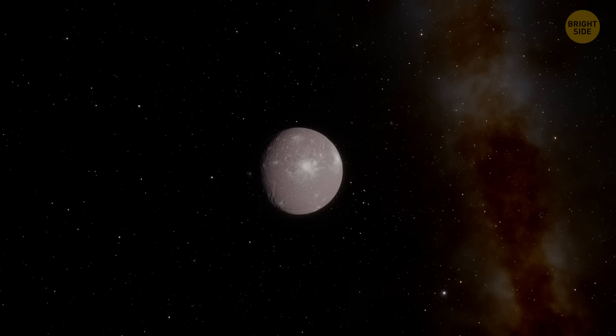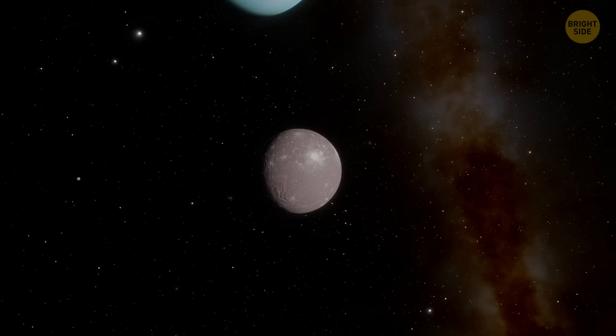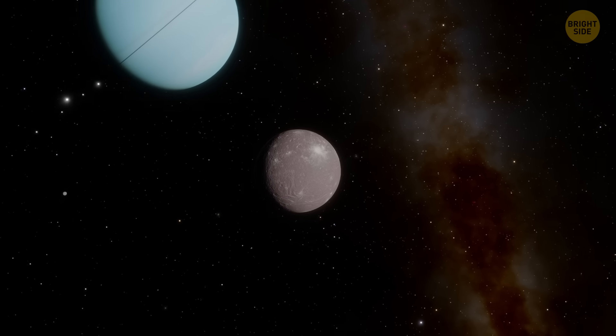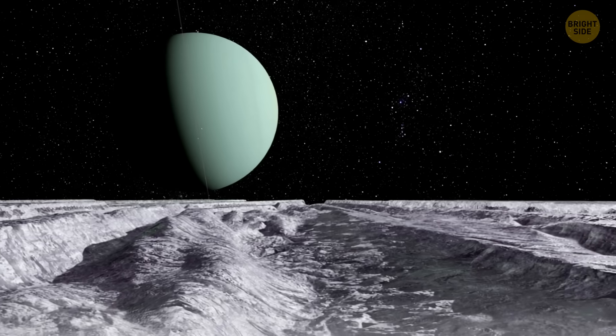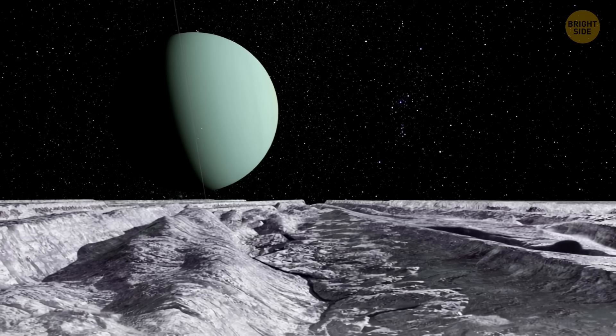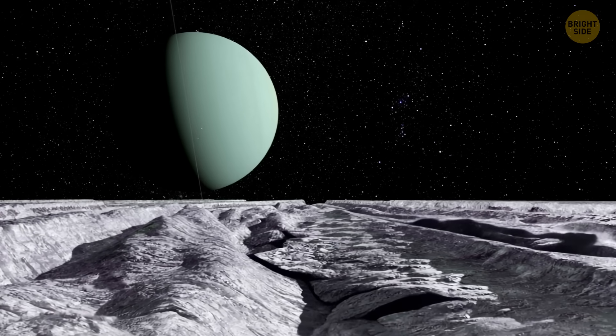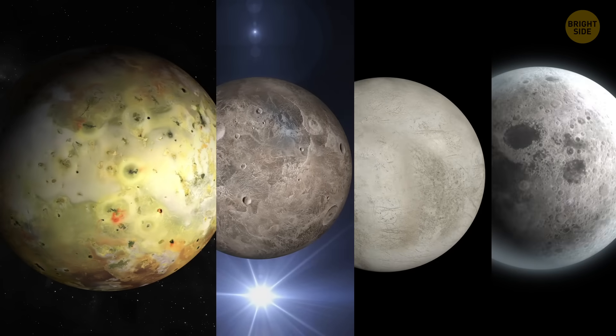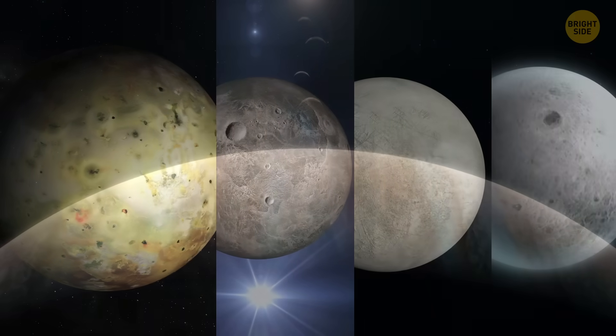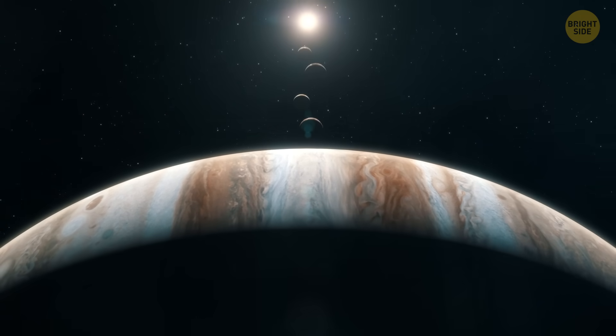Those details might not sound exciting until you realize what they mean. This moon was geologically active, moving, cracking, and reshaping itself like Earth does. That's rare in the outer solar system, where most moons are just frozen popsicles, quietly spinning around their planet.